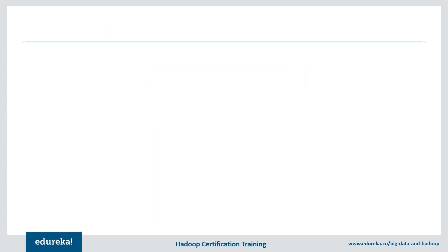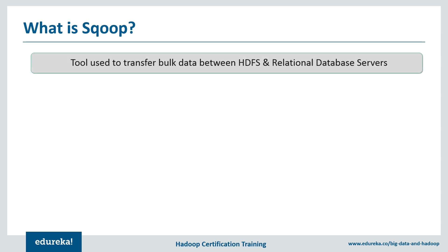Now let's understand what Sqoop is. The first two letters in Sqoop stand for the first two letters in SQL, and the last three letters refer to the last three letters in Hadoop — OOP. So it clearly depicts that it is SQL to Hadoop and Hadoop to SQL. That is how the name Sqoop came into existence.